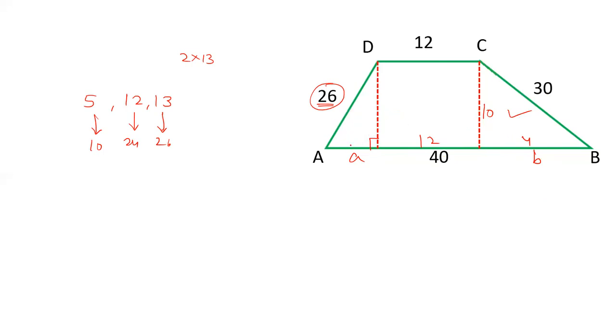So now let's check this as 10, this is 24. So this will be 24 and this is, if this is 10, 40 minus 10 minus 12 is 18. This is 18. Now this numbers 18, 24, and 30 are multiple of Pythagoras triplet 3, 4, 5.